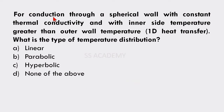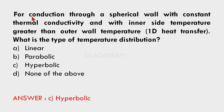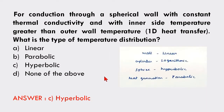Next question: For conduction through a spherical wall with constant thermal conductivity, with inner side temperature greater than outer wall temperature, in one-dimensional heat transfer, what is the type of temperature distribution — linear, parabolic, hyperbolic, or none of the above? The answer is hyperbolic. Tip: For a sphere, temperature distribution is hyperbolic; for a wall it is linear; for a cylinder it is logarithmic; and for heat generation or a heat source, the temperature distribution is parabolic.